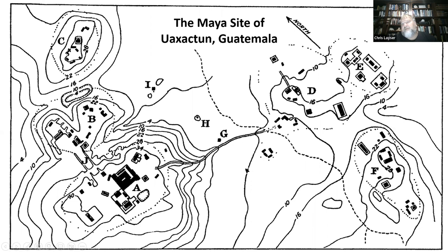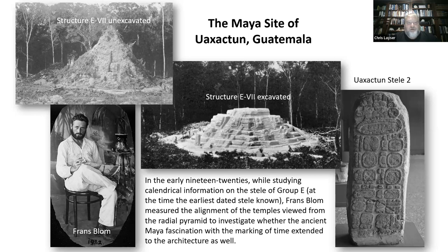Here's the Maya site of Washaktun in the early part of the 20th century. In the early 1920s, the site was excavated. Here we have structure E7, which is the western temple on the western side of the complex. There's a picture of it before and after excavation.